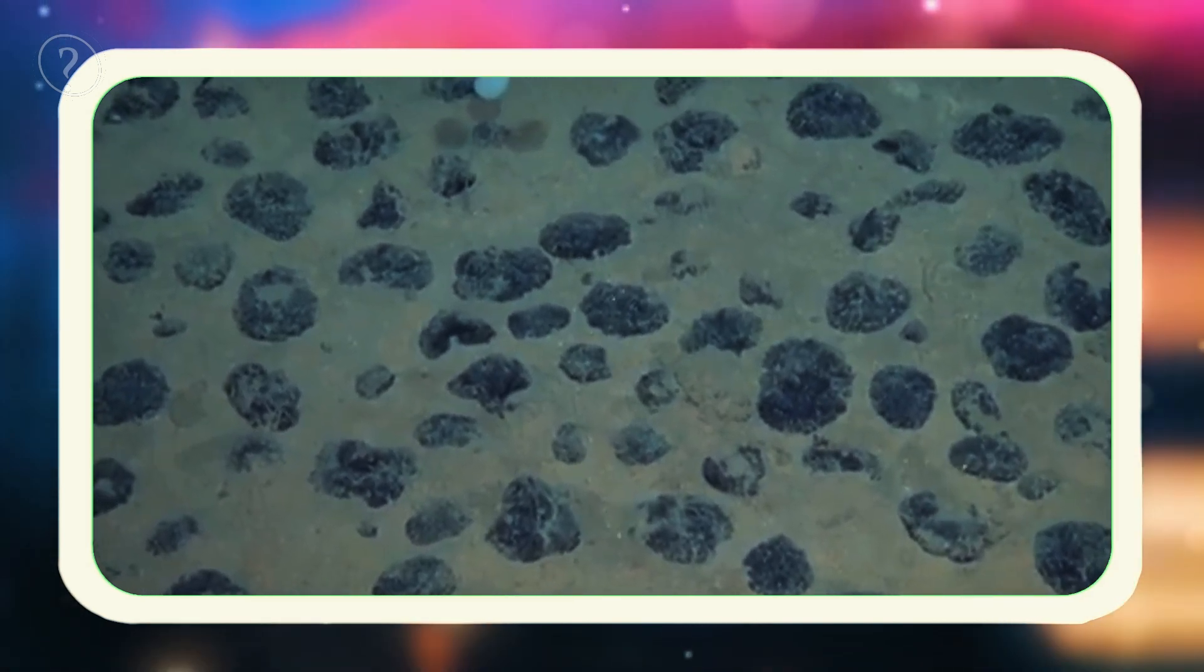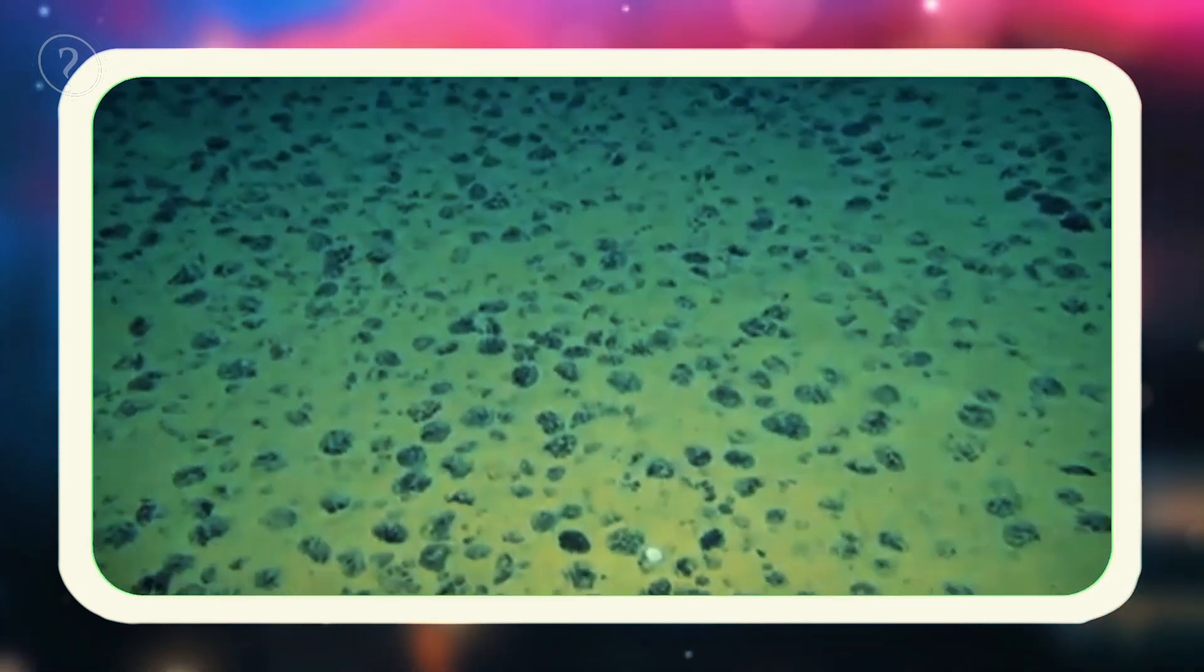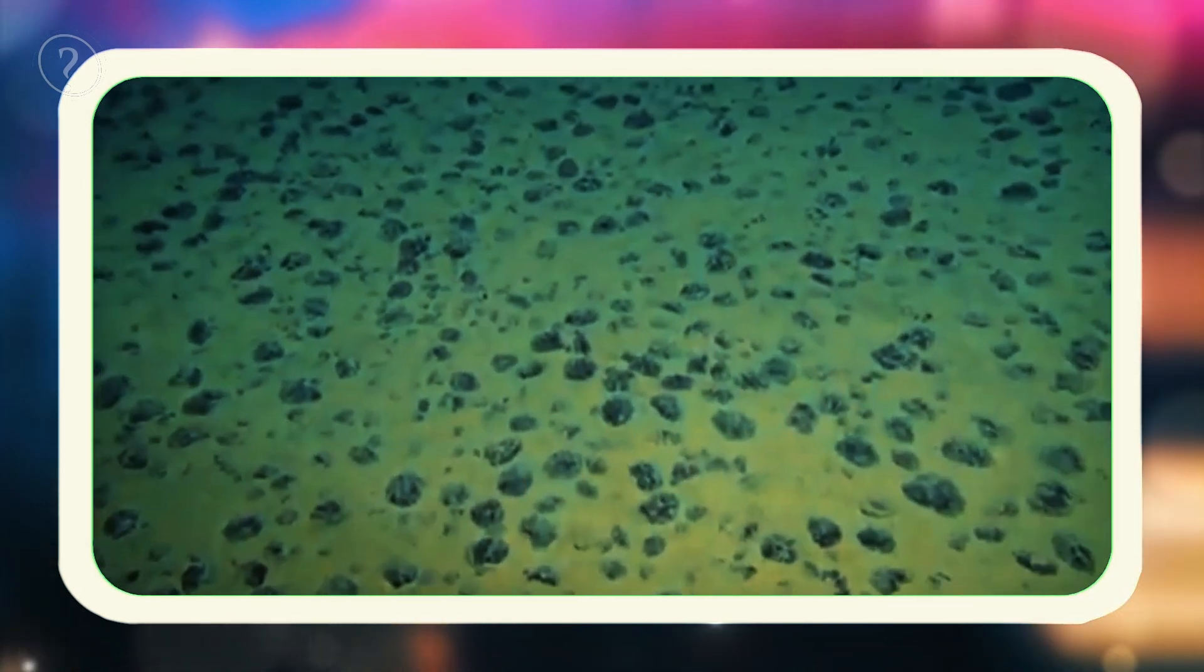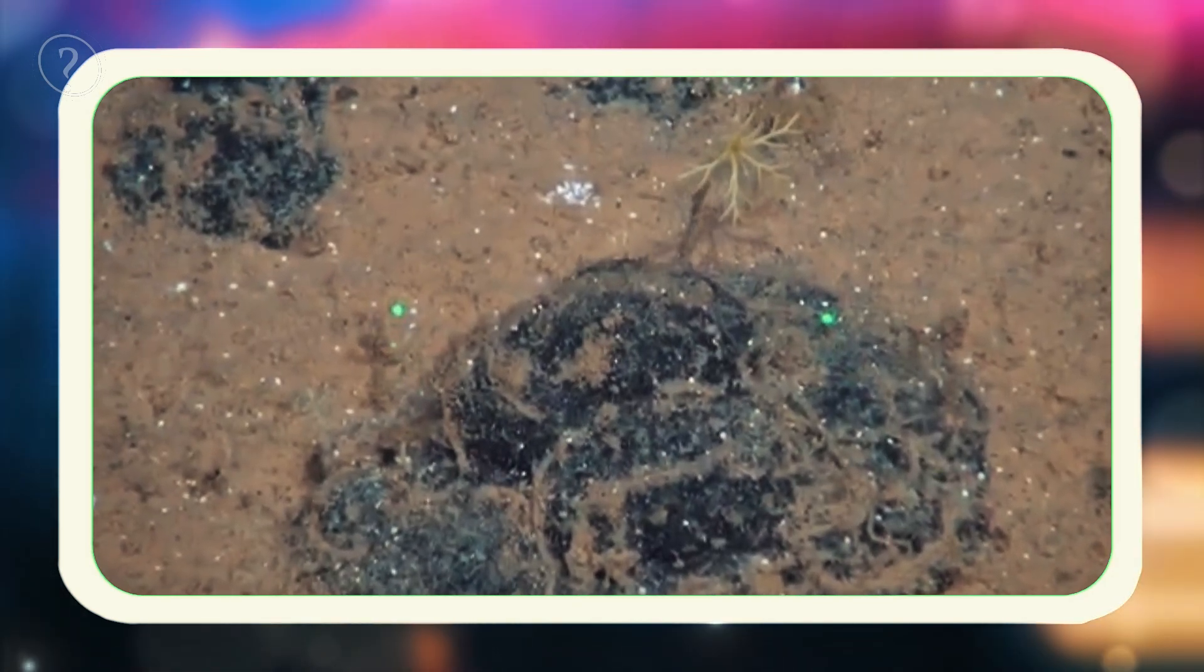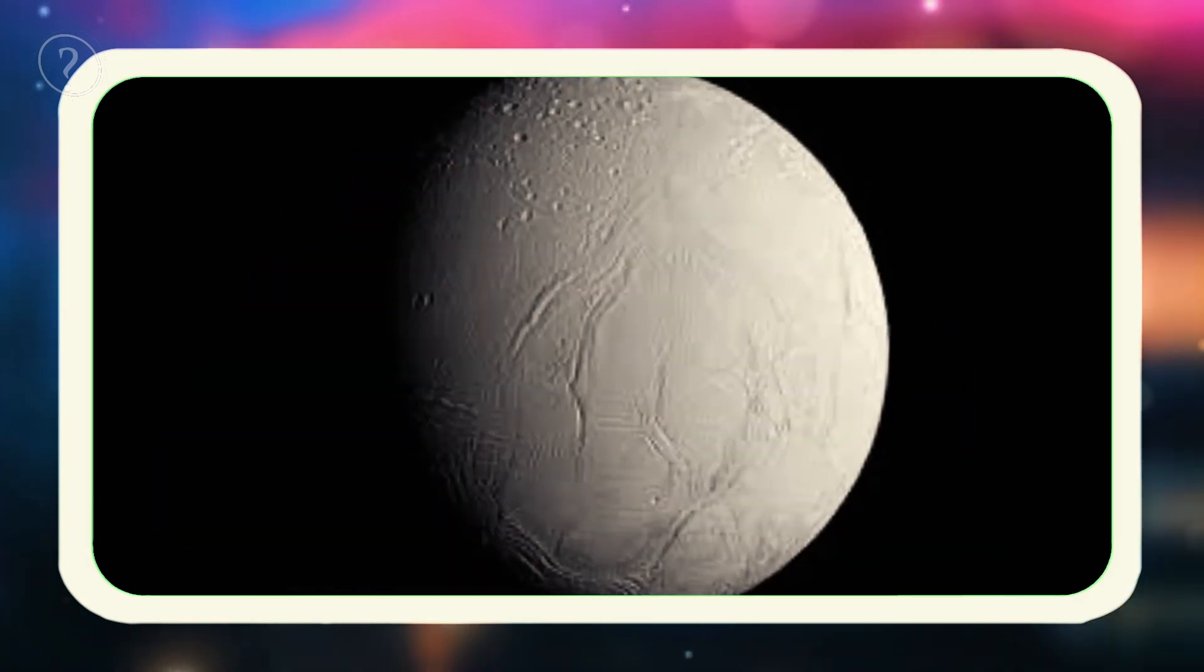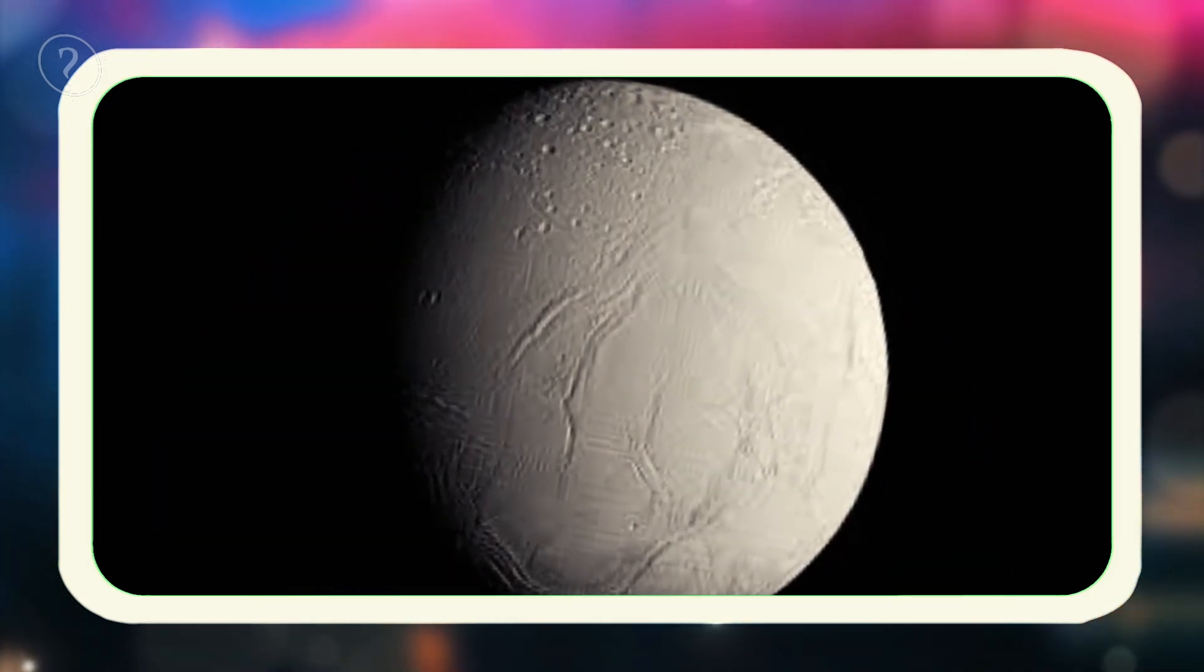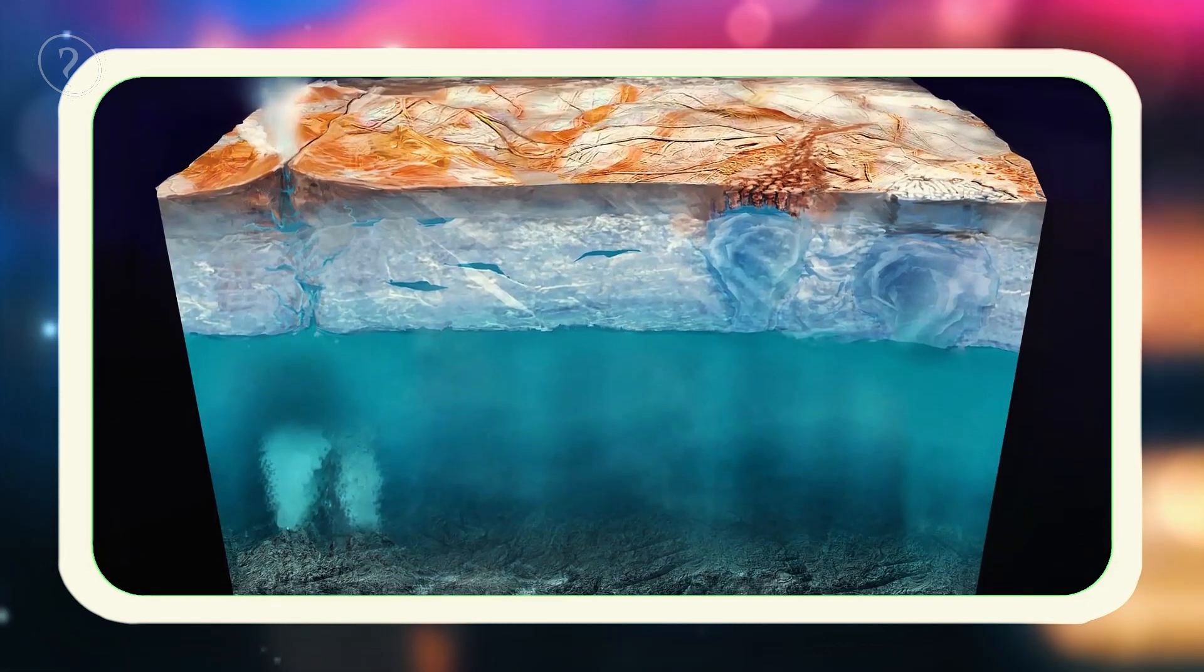It suggests that there might be another fundamental way oxygen is produced on our planet, independent of sunlight. This could even change how we think about the possibility of life on other planets, particularly those without direct sunlight like Jupiter's moon Europa or Saturn's moon Enceladus, which are believed to harbor subsurface oceans. If similar oxygen-producing rocks exist in these alien oceans, it could dramatically increase the potential for life beyond Earth.